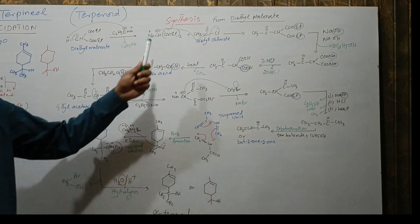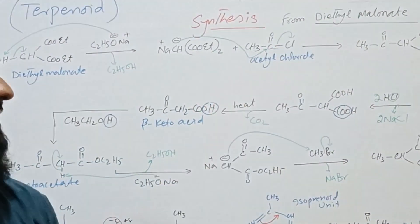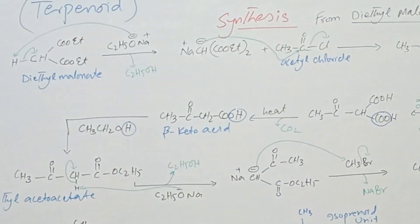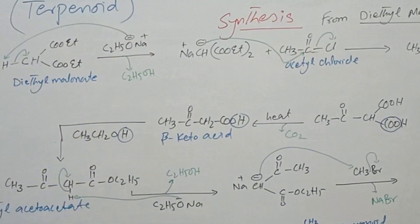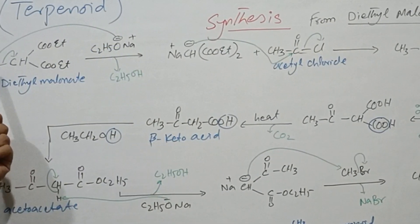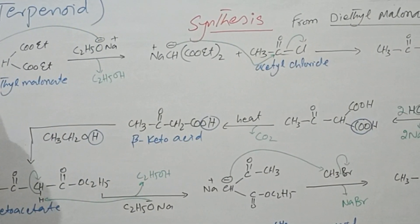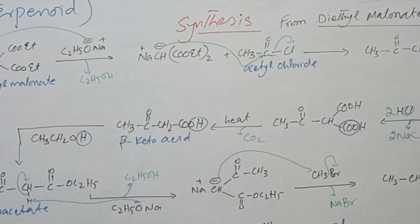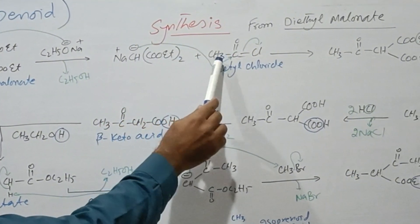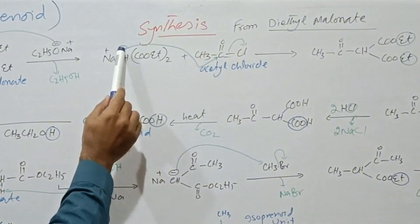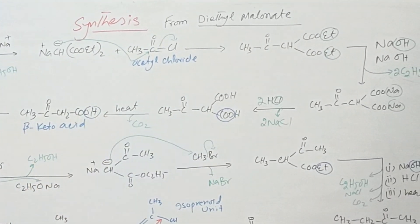Now for synthesis of alpha-terpineol, I will discuss synthesis from diethyl malonate. When diethyl malonate is reacted with base, the acidic hydrogen is removed as ethoxide ion. The bond shifts to carbon and a carbanion is formed, which is neutralized with sodium ion. This carbanion then reacts with acetyl chloride where the negatively charged carbon attacks the carbonyl carbon, chloride is removed, and we get this structure.